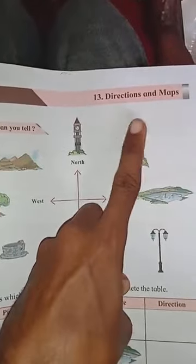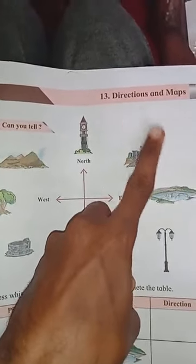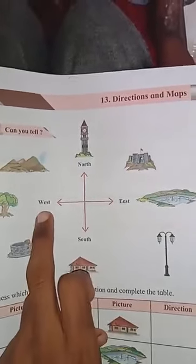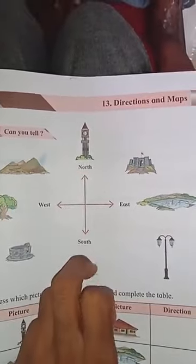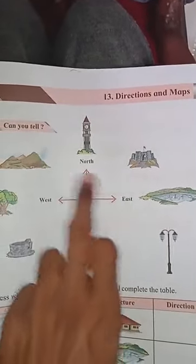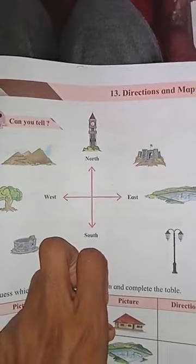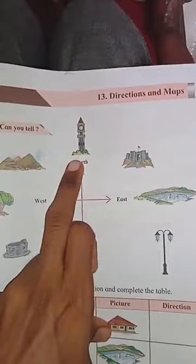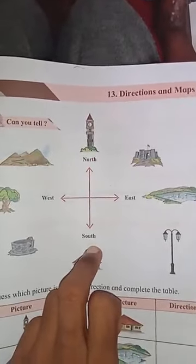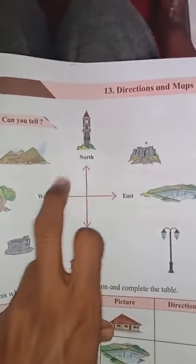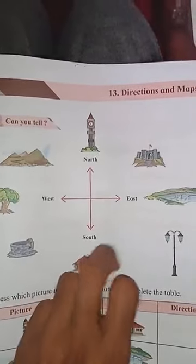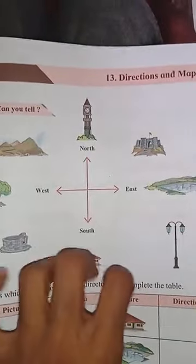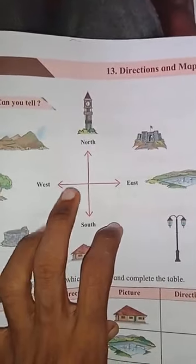There are four main directions: East, West, North, and South. So there are four main directions - East, West, North, and South. By looking at this picture we are going to study the chart and observe which things are located in which direction.